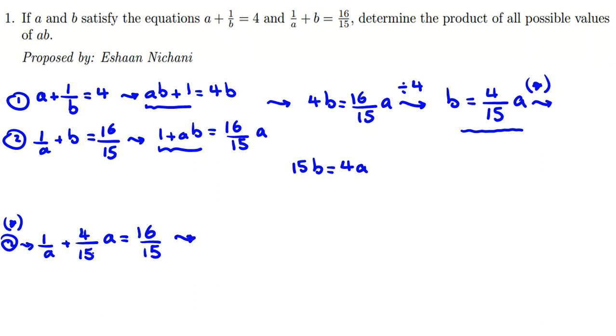4 over 15 a equals 16 over 15. Now if we multiply both sides by 15a, it will be 15 plus 4a squared equals 16a.